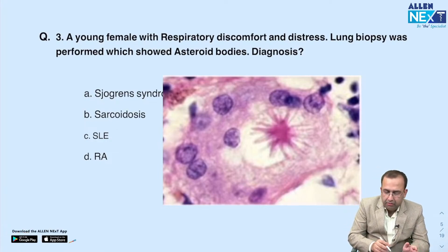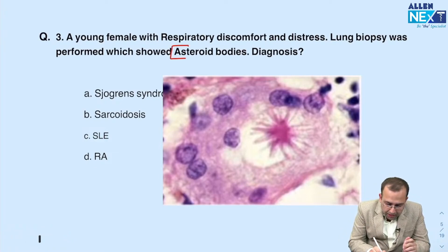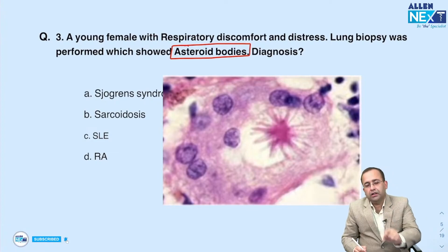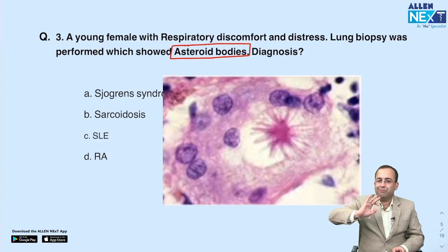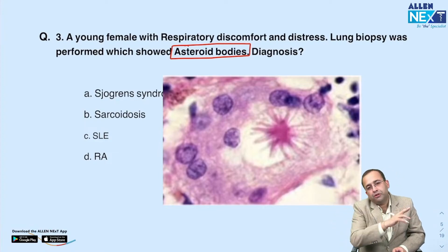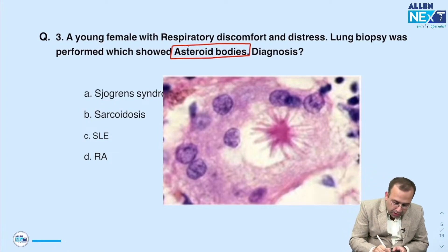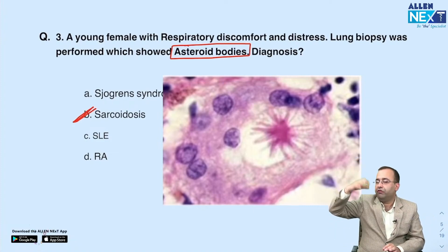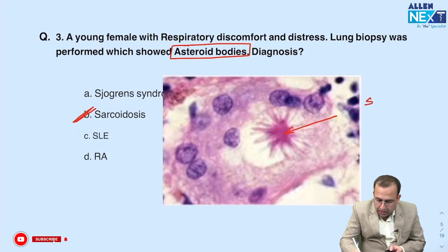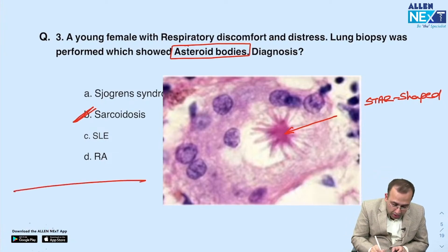Third question: a young female with respiratory discomfort and distress — lung biopsy showed the presence of asteroid bodies. Asteroid bodies are star-shaped inclusions in giant cells, and they are seen in sarcoidosis. Also remember: Howell-Jolly bodies in megaloblastic anemia and post-splenectomy; Schaumann bodies also in sarcoidosis.